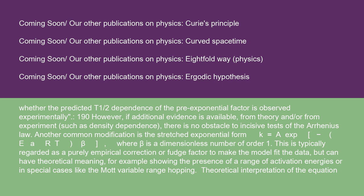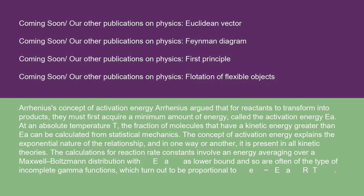Theoretical interpretation of the equation: Arrhenius' concept of activation energy. Arrhenius argued that for reactants to transform into products, they must first acquire a minimum amount of energy, called the activation energy Ea. At an absolute temperature T, the fraction of molecules that have a kinetic energy greater than Ea can be calculated from statistical mechanics. The concept of activation energy explains the exponential nature of the relationship, and in one way or another, it is present in all kinetic theories. The calculations for reaction rate constants involve an energy averaging over a Maxwell-Boltzmann distribution with Ea as lower bound, and so are often of the type of incomplete gamma functions, which turn out to be proportional to e^(-Ea/RT).